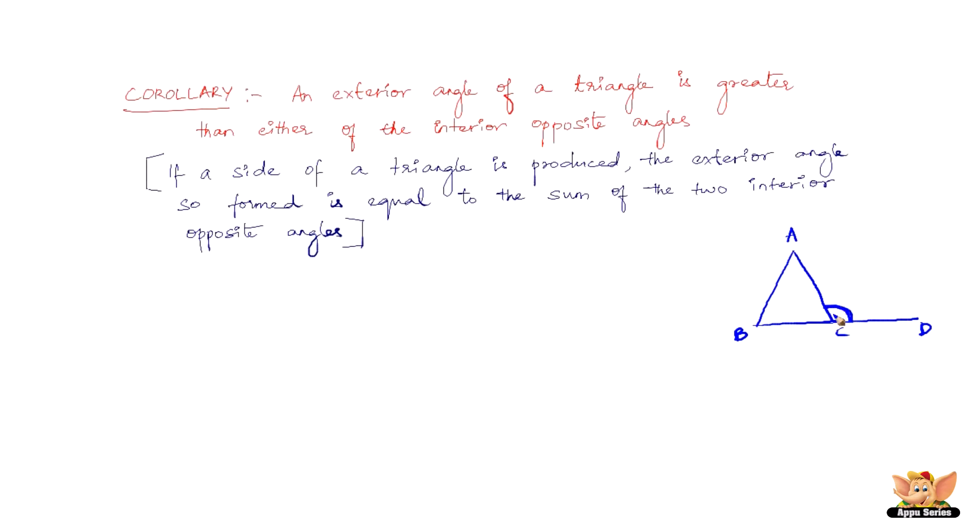The exterior angle so formed is equal to the sum of the two interior opposite angles. The interior opposite angles to this angle are this and this, not this, because this is an adjacent angle. Now, this is equal to this plus this. That is angle ACD equals angle ABC plus angle BAC.